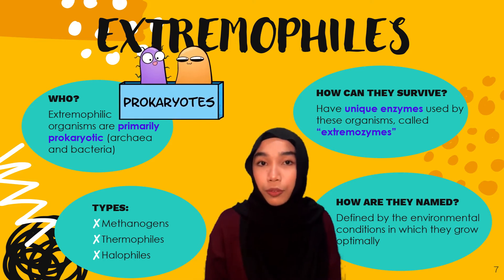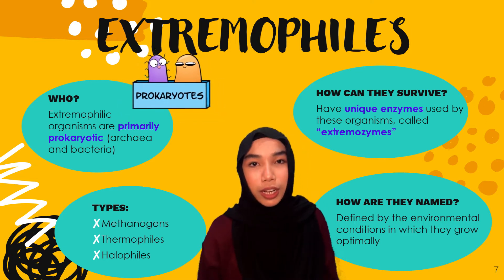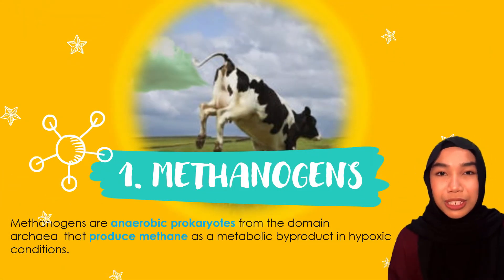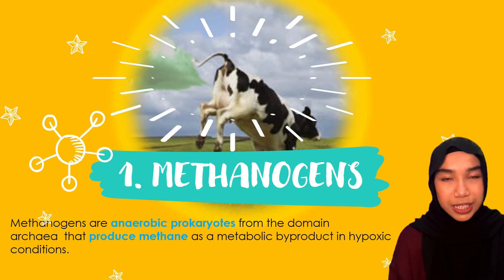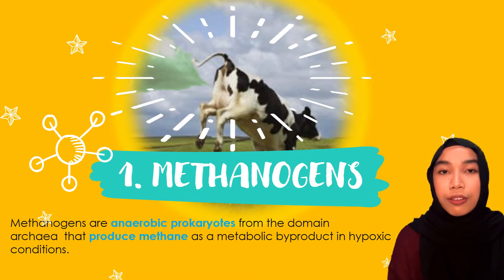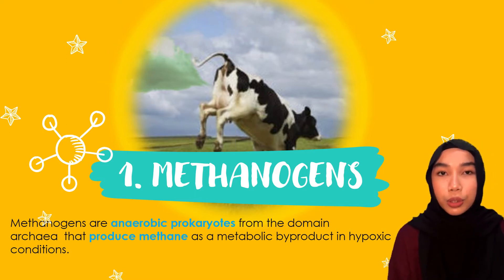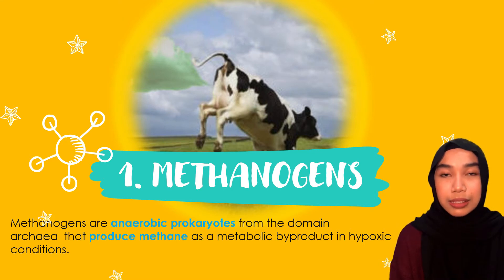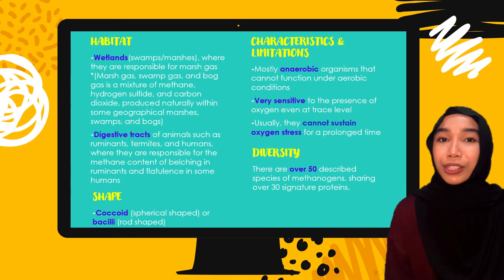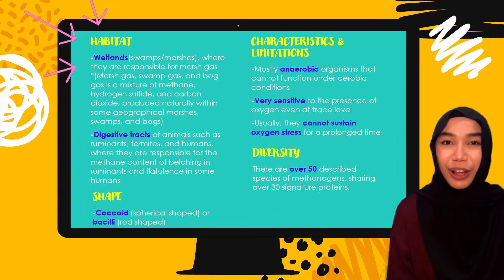For example, thermophiles means heat-loving and they thrive in really hot areas. The first extremophile I'll be talking about today is methanogen. A methanogen is an anaerobic prokaryote from the domain Archaea that produces methane gas as a metabolic byproduct in hypoxic conditions.